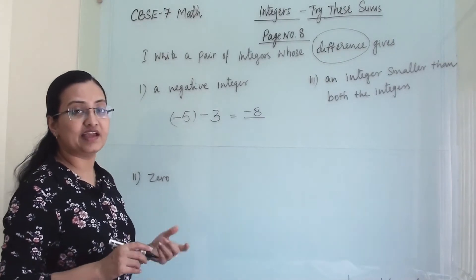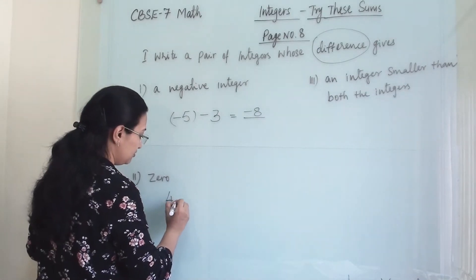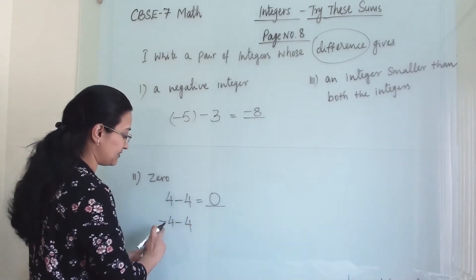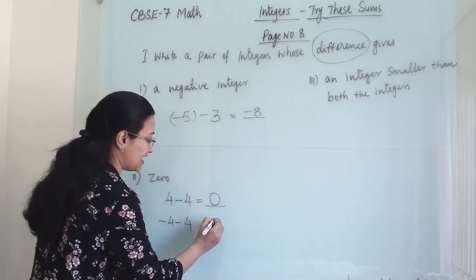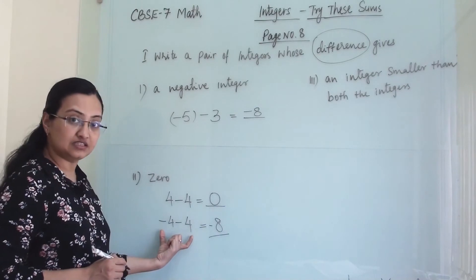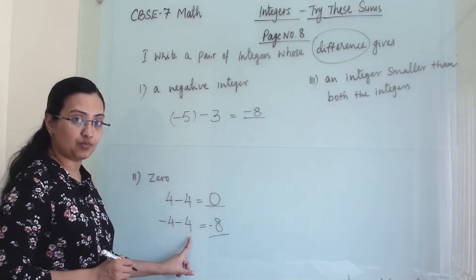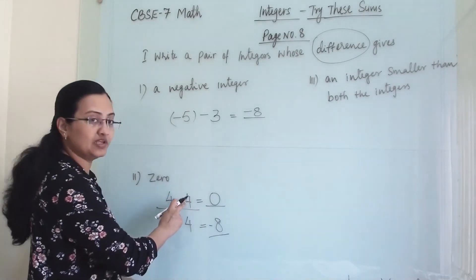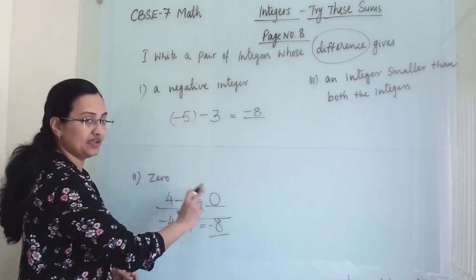Next, we need a difference that gives 0. We get 0 from a difference when two opposite integers are used. For example, 4 minus 4 gives 0. If we write it as 4 minus minus 4, the minus minus becomes plus, leading to addition, and the answer carries a negative sign. Written simply as 4 minus 4, we get 0.